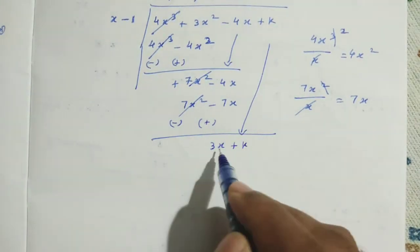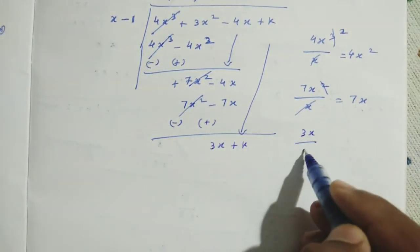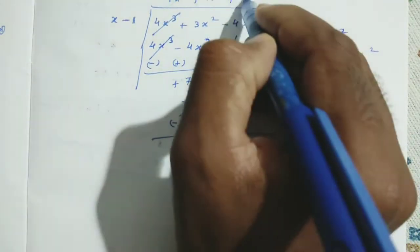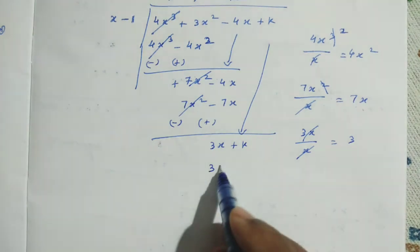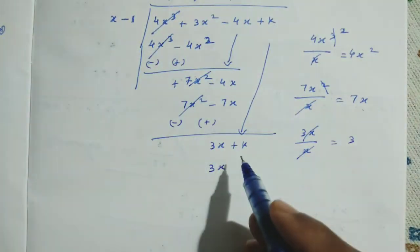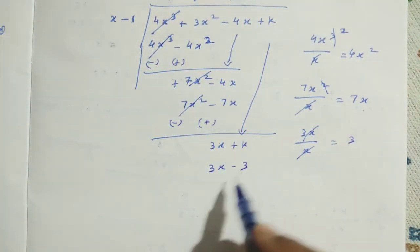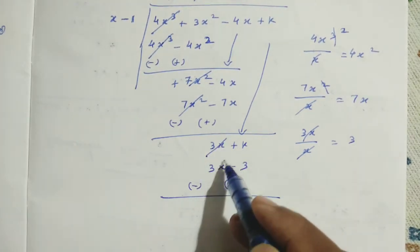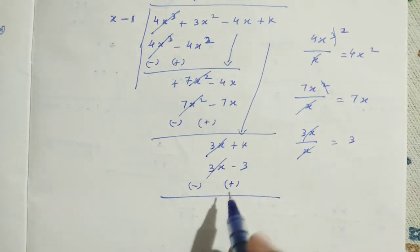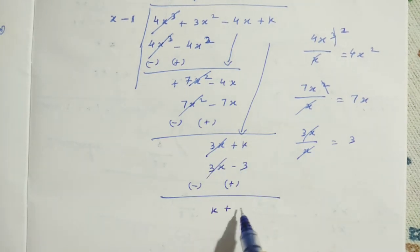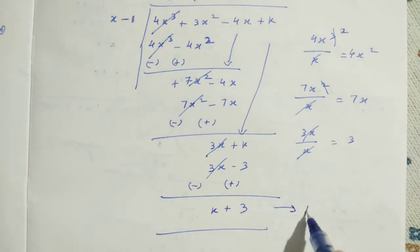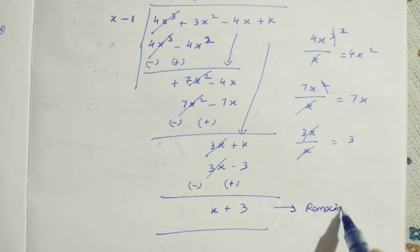Now first term: 3x divided by x gives 3. So plus 3. Then 3 times x minus 1 gives 3x minus 3. Changing sign: minus then plus. 3x and minus 3x cancel. The remainder is k plus 3. So x plus 3 — wait, k plus 3 — is the remainder.